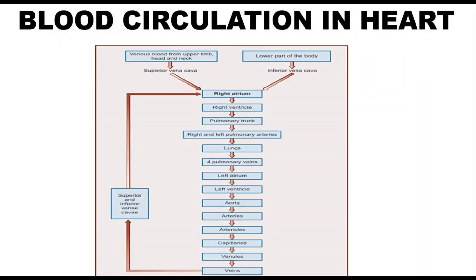Blood circulation is divided into two types: systemic circulation and pulmonary circulation. The superior vena cava carries blood from the upper limbs, head, and neck, while the inferior vena cava carries blood from the lower part of the body. These two vena cavae supply blood to the right atrium.